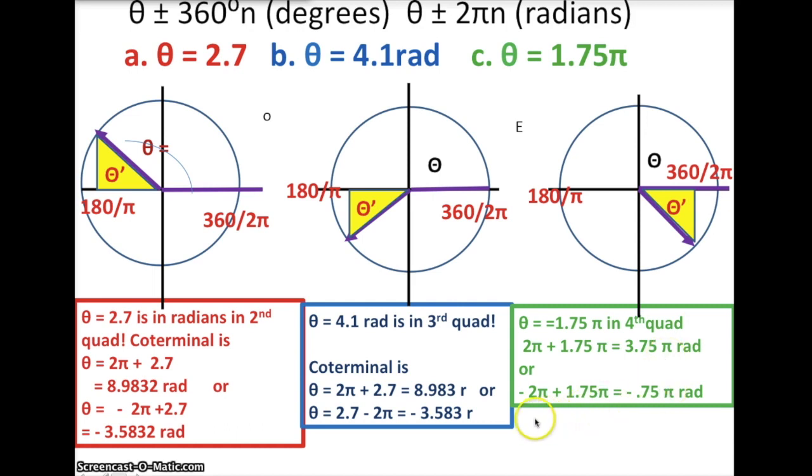I could subtract 2π, and that would give me negative 0.75π radians. Negative three fourths π, so that would be right around in here. I'm sorry, this would be 0.25. That's a mistake. Okay, hope this helps you a little bit on coterminal.